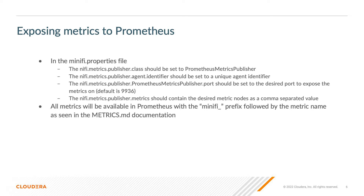So how can these be exposed to Prometheus? For this, you have to modify the MiniFi properties file, and there are some property options that have to be set, like the class should be set to Prometheus metrics publisher, and you have to set the agent identifier that should be a unique ID for your MiniFi agent. That will be shown in Prometheus as a label that can be filtered on. You also have to set the port for this. The default port is 9936, but you can set any desired port for the metrics to be published on. You also have to set which metric nodes should be selected, providing a comma-separated value with the metric nodes you want to expose to Prometheus. After you do this, all the metrics will be available in Prometheus with the minifi prefix, followed by the metric name that is defined in the metrics.md documentation file. That documentation file can be found on our GitHub page.